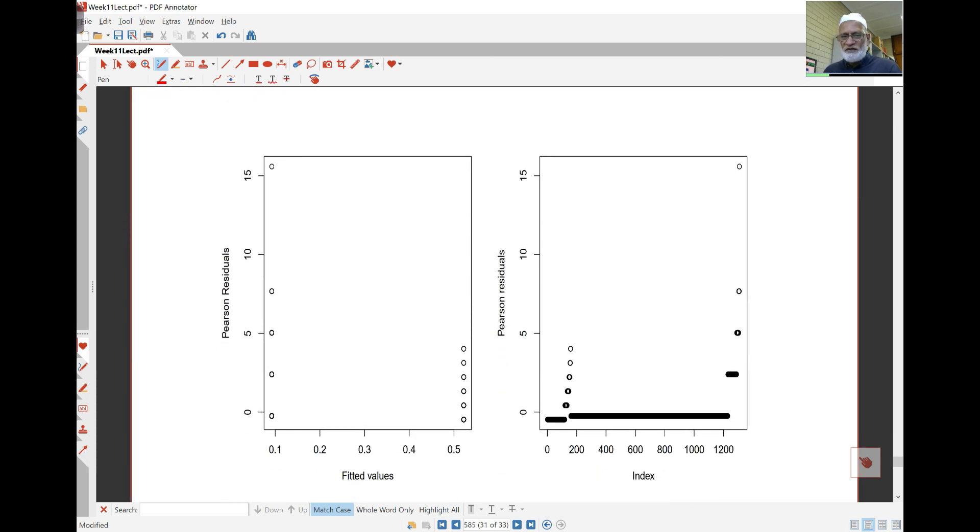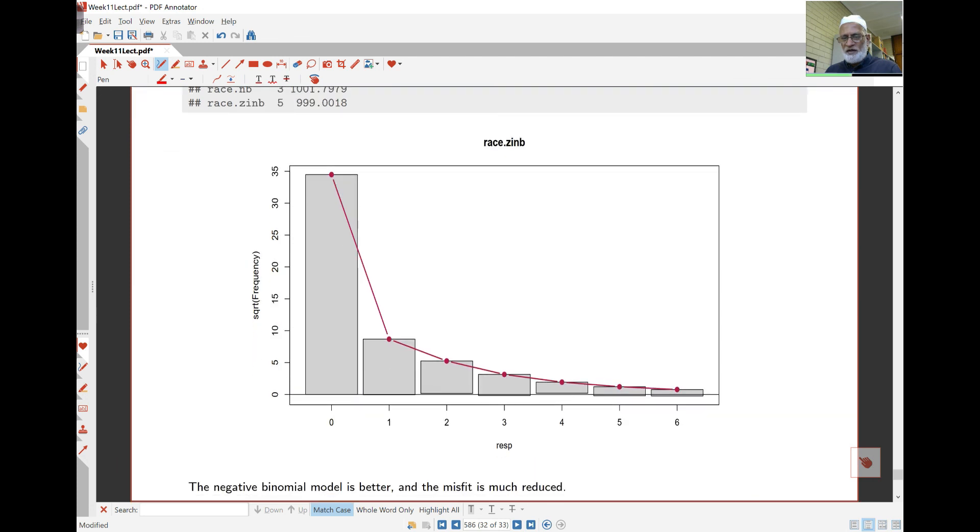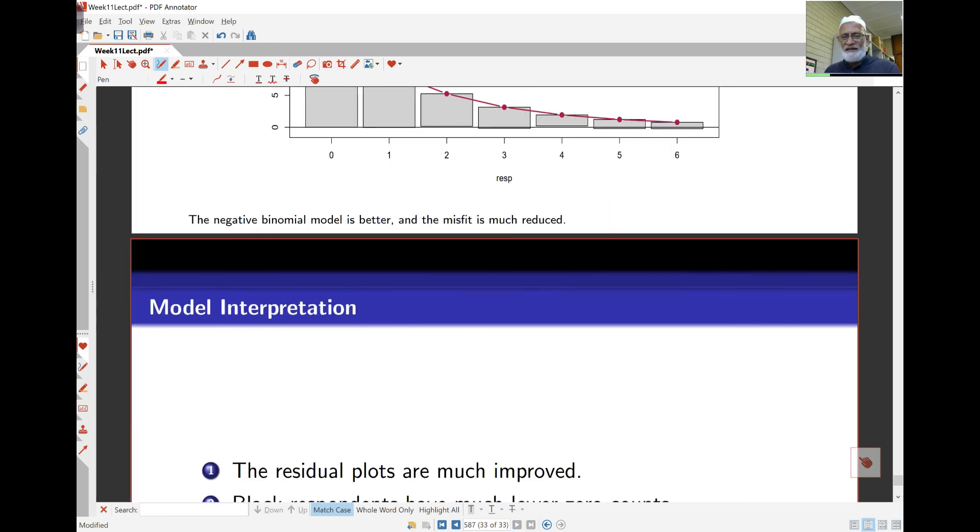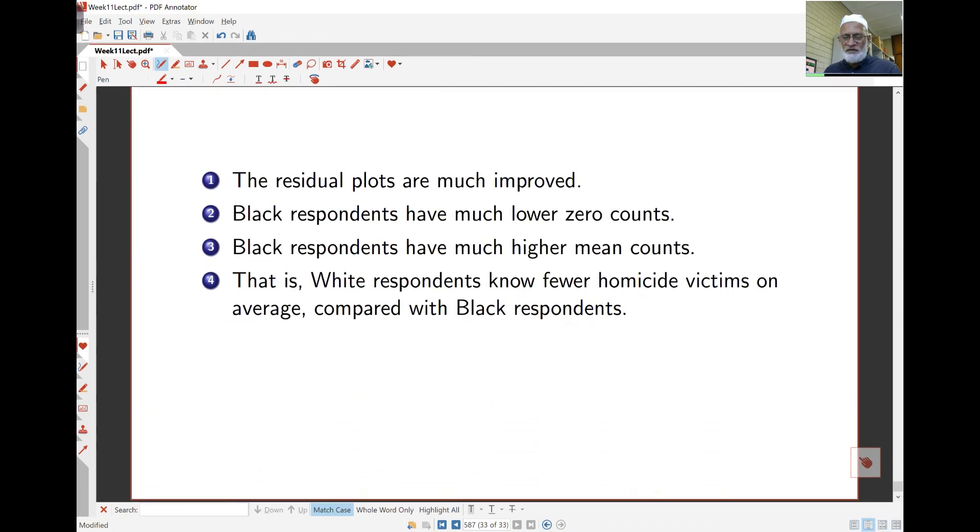The residual plot has again improved. It's under 15 or so now. We can judge from the next part of rootogram how the fits are going. We find most of the fits are fine. We've got the one and zero and one is okay. Two is slightly maybe overestimated. Three is a little down, four is a little high. But it certainly has improved. The black respondents have much lower zero counts and have much higher mean counts. The white respondents knew fewer homicide victims than those on average black respondents.